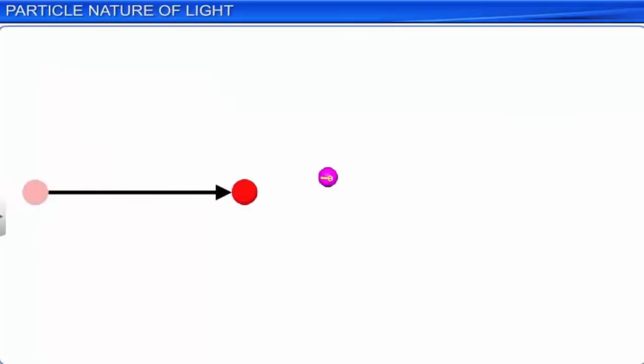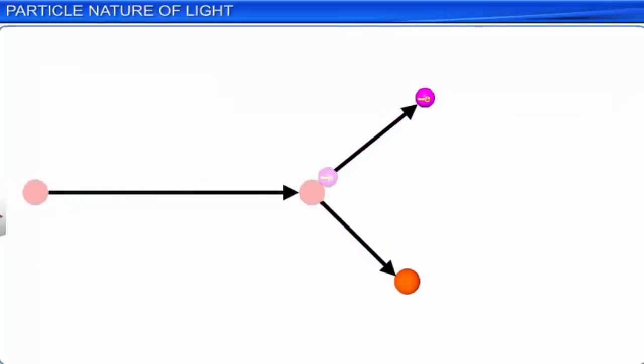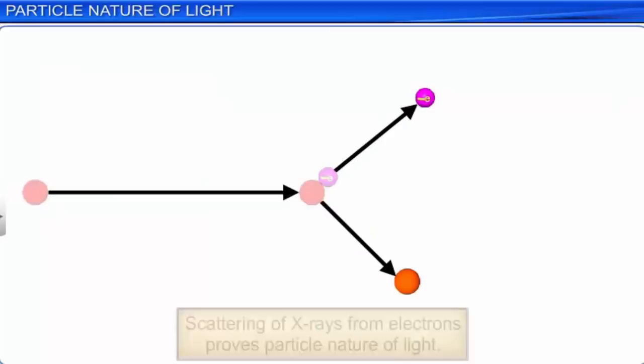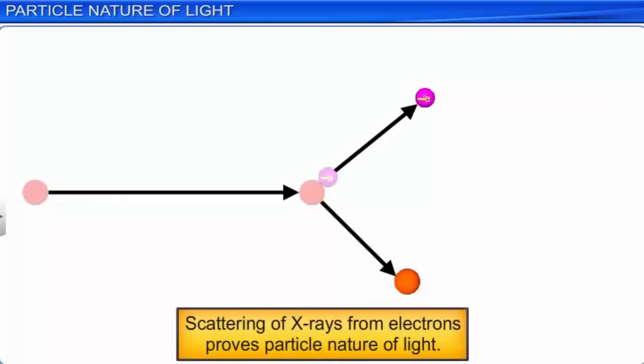Each quanta has definite energy as well as momentum, and hence each packet of energy can be treated as a particle, which is called a photon. Now we can say that light possesses a particle nature as well. In 1924, A.H. Compton proved the particle nature of light with his experiment on scattering of x-rays from electrons. The phenomenon of scattering of x-rays from electrons is called the Compton effect.